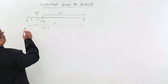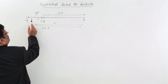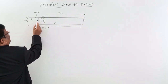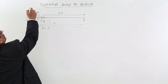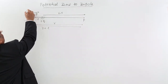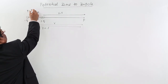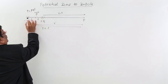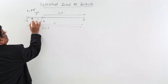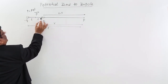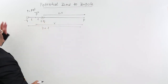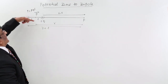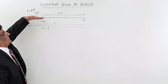Here is a dipole: minus Q and plus Q. The distance between the two charges is 2L. We know P = 2QL is the dipole moment — that is the effectiveness of a dipole — and the direction of the dipole moment is from minus to plus.